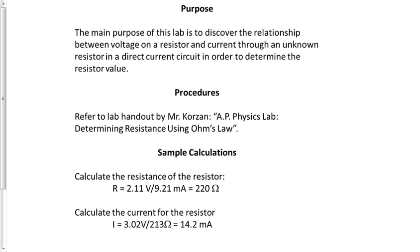On the next page, you'll notice titles for each section. The first section is the purpose, where you describe the main goal of the lab and how it's going to be achieved. This particular lab is about Ohm's Law, so the purpose is to discover the relationship between voltage and a resistor and current through an Ohmic resistor in order to determine the resistor's value. Always include what the goal of the lab is and how it's going to be accomplished.